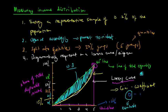The Gini coefficient is an important tool for measuring income distribution in an economy. Australia's current Gini coefficient is around 0.331, and the ABS aims for it to be close to 0.3. They don't want it to be 0 because total equality may compromise other economic goals — there is a trade-off between equity and efficiency in economics, which will be discussed in a further lecture.